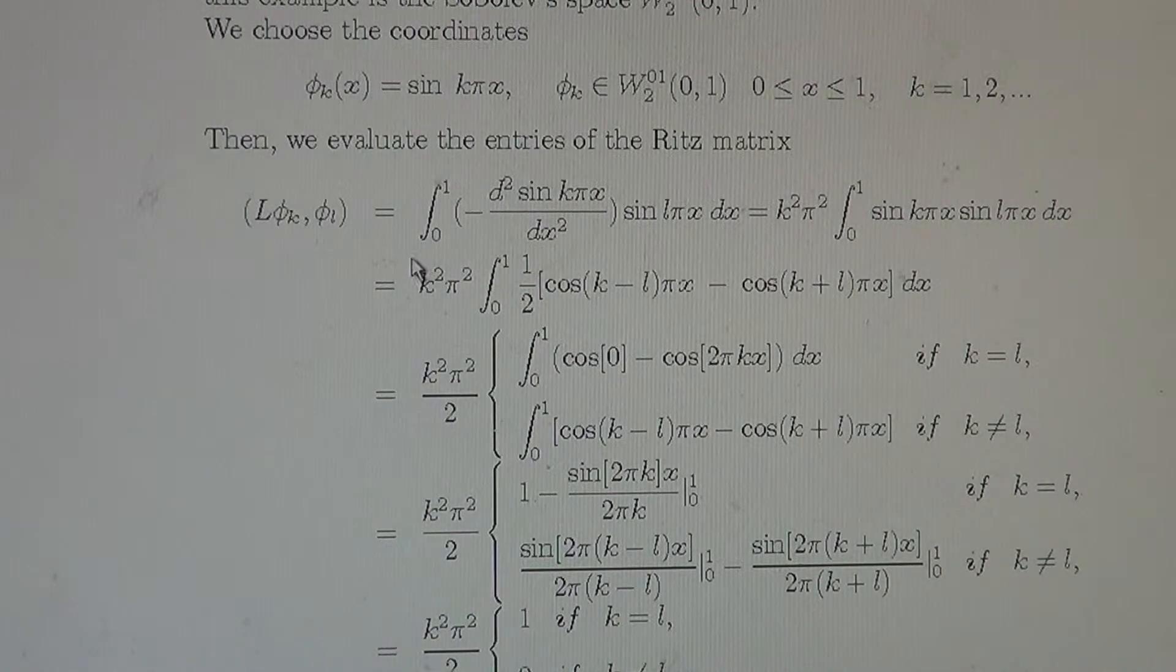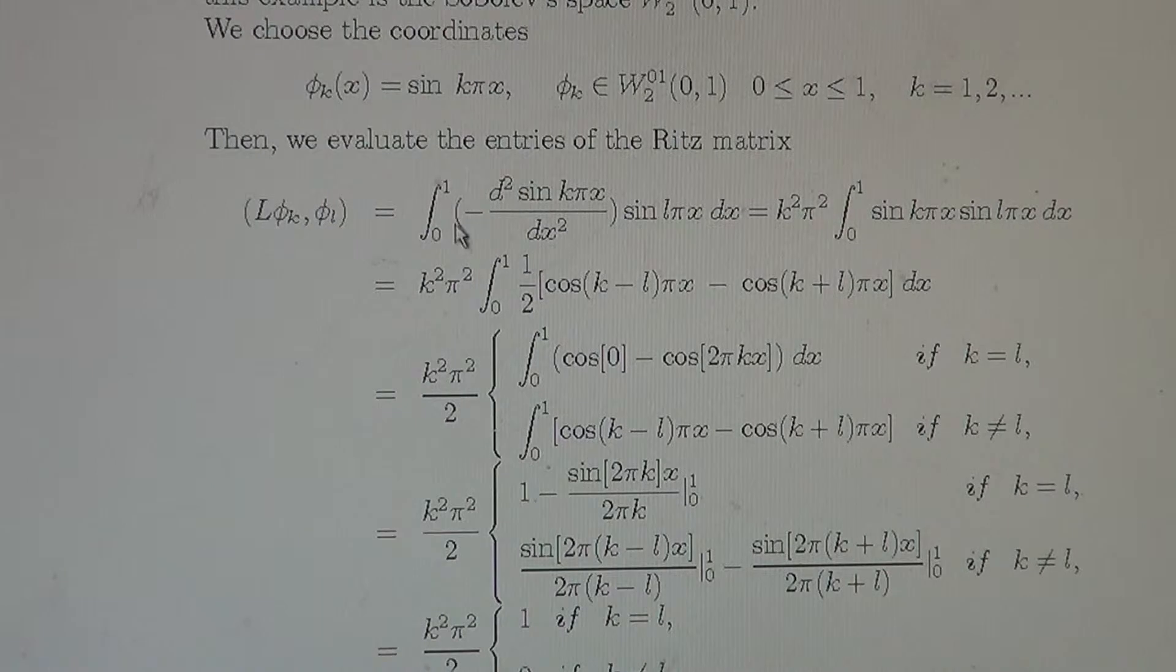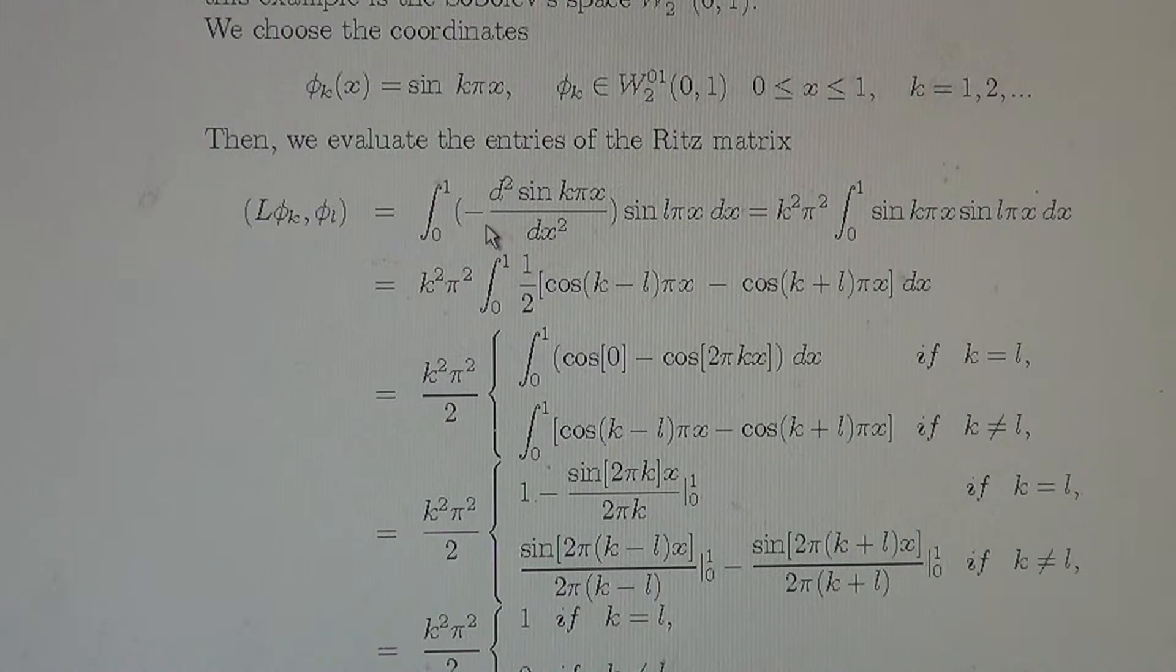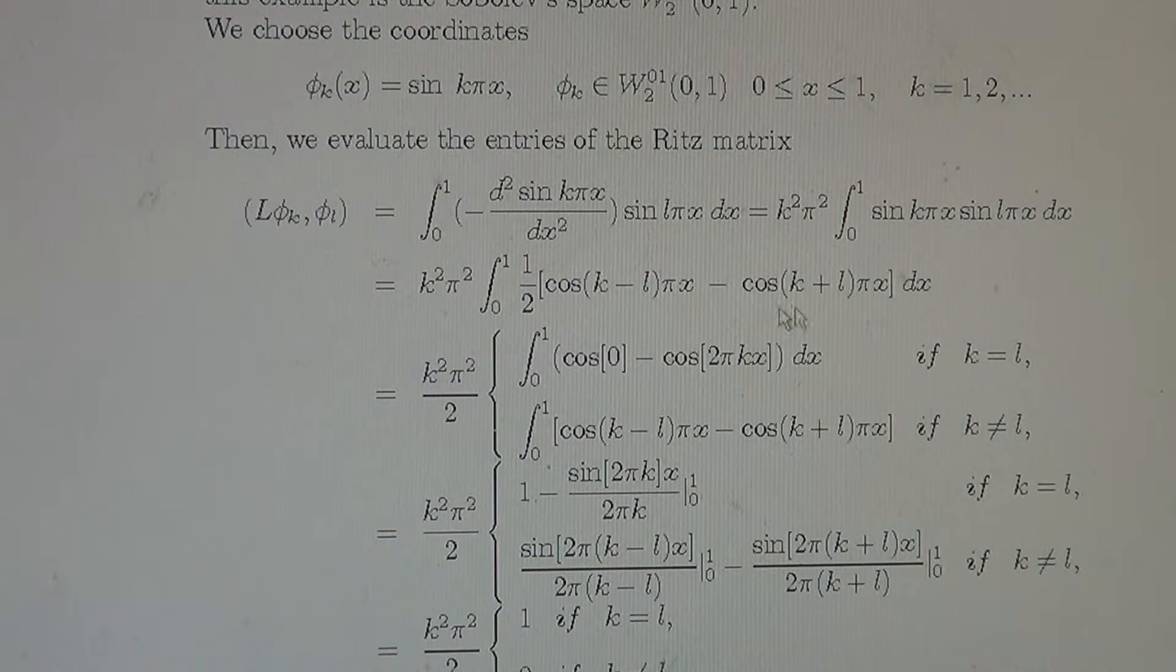Then we evaluate the entries to the Ritz method. This inner product with a positive definite operator L in the example is L phi k phi L equals integral from 0 to 1 minus second derivative times sine L pi x. The second derivative of sine is again sine with the coefficient k square pi square because of the composed argument k pi x, minus will go for plus when we evaluate the second derivative.